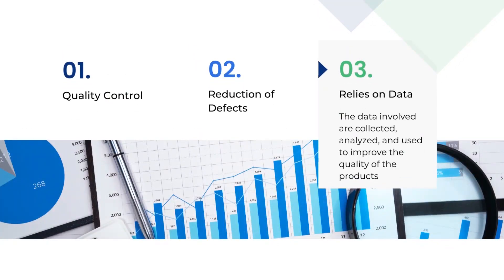The third advantage is that Six Sigma relies on data. Six Sigma in manufacturing completely relies on data associated with the manufacturing process. The data involved are collected, analyzed, and used to improve the quality of the products. It improves the prediction rate with which future errors are avoided. The data regarding failures and wastes are documented for any reference related to production. The standard of production is improved with statistical data analysis.